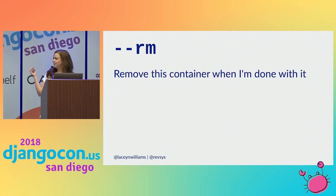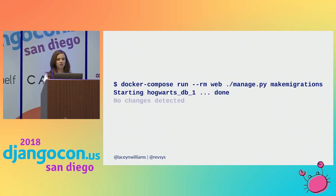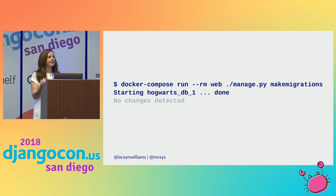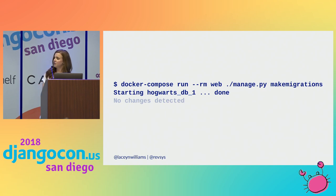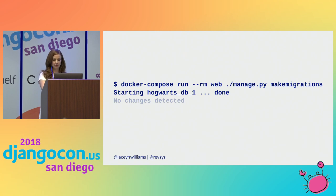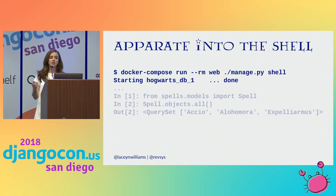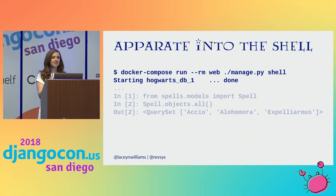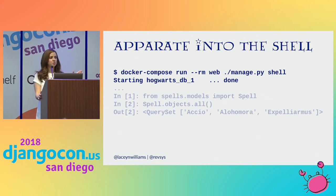The --rm flag means: trash this container when I'm done with it. So whenever you run something like docker compose run and you've already run docker compose up, Docker is going to start a second web container just to run those migrations. You already have your container running your server, so you don't need the migrations container anymore — passing --rm will go ahead and remove that container so you don't clutter up your system. You can also hop into the shell the same way, which is pretty handy. Basically anything you're used to doing with a Django project from the command line, you can still do with Docker — just prefix it with docker compose run and the name of your service.